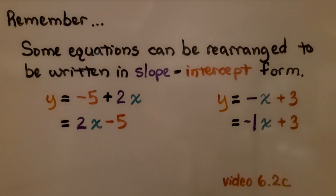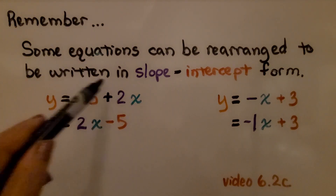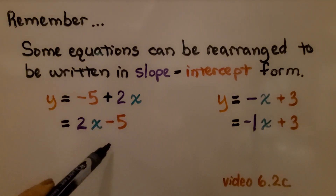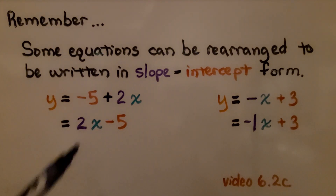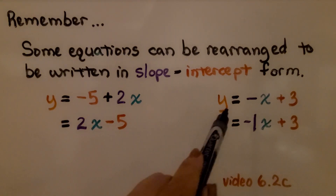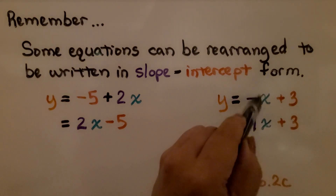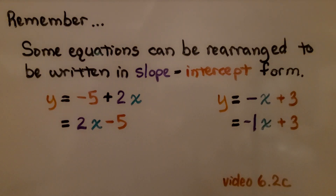Remember, some equations can be rearranged into slope-intercept form. If we see something like y = negative 5 + 2x, we can reorder the addition: since that negative goes with the 5, we have y = 2x minus 5, with a positive slope of 2. And if we have y = negative x + 3, remember there's an invisible 1: it's really negative 1x + 3, giving us our slope and x value. If you don't understand this, go back to video 6.2c, which is linked in the description.